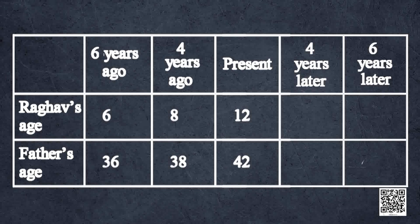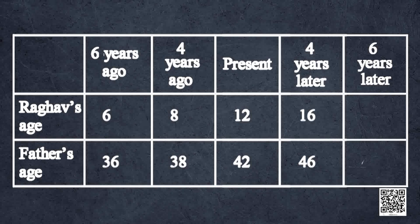To find their ages 4 years later, we have to add 4 to their present age. So we get 12 plus 4 equals 16 years, and 42 plus 4 equals 46 years. To find their ages 6 years later: Rankov's age will be 12 plus 6 equals 18 years, and his father's age would be 42 plus 6 equals 48 years.